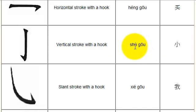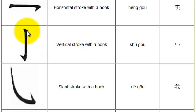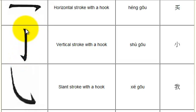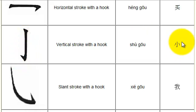Next you have shu gou. Shu gou means vertical stroke with a hook. It's drawn just like a vertical stroke from the top down to the bottom, and then a hook. Here's an example of shu gou being used in this character in the middle.